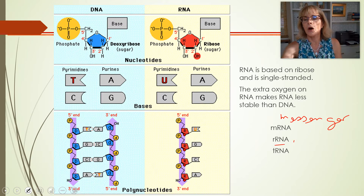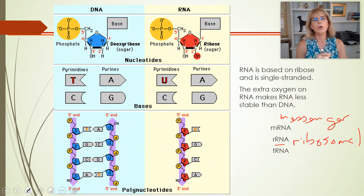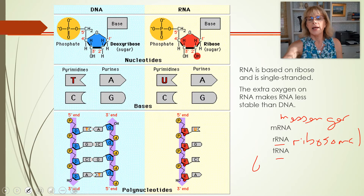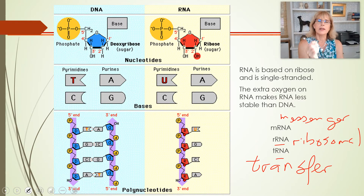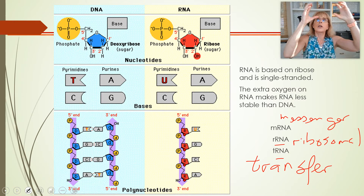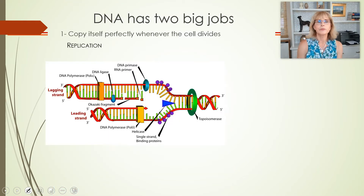RRNA — that R stands for ribosomal. Have you ever wondered what ribosomes are made out of? Ribosomes are made out of ribosomal RNA and protein — I think that's an exam question. The last one, tRNA — the T stands for transfer. And tRNAs have a very important job: it is their job to carry an amino acid to the ribosome as the ribosome is putting amino acids together.